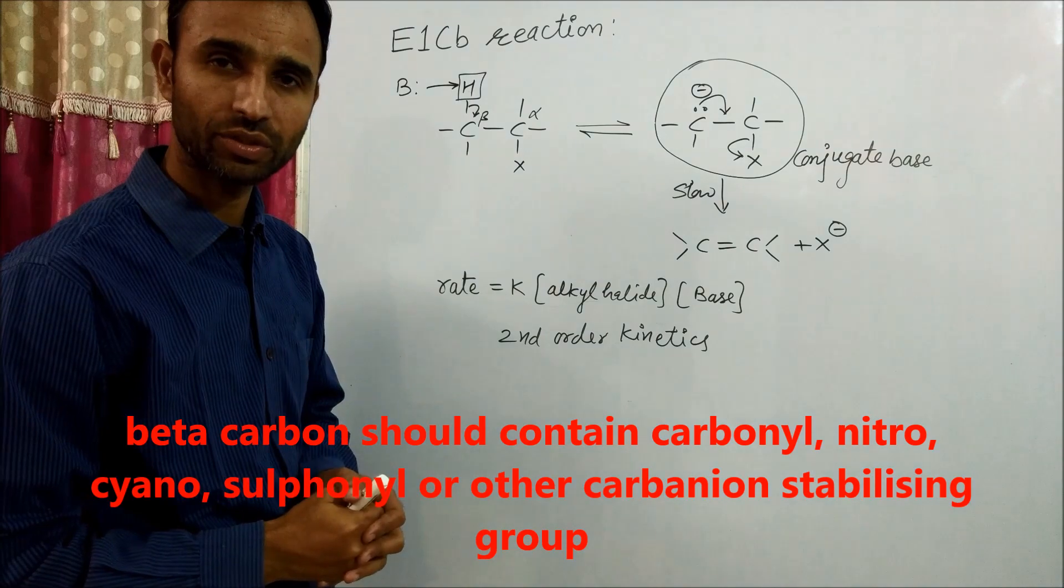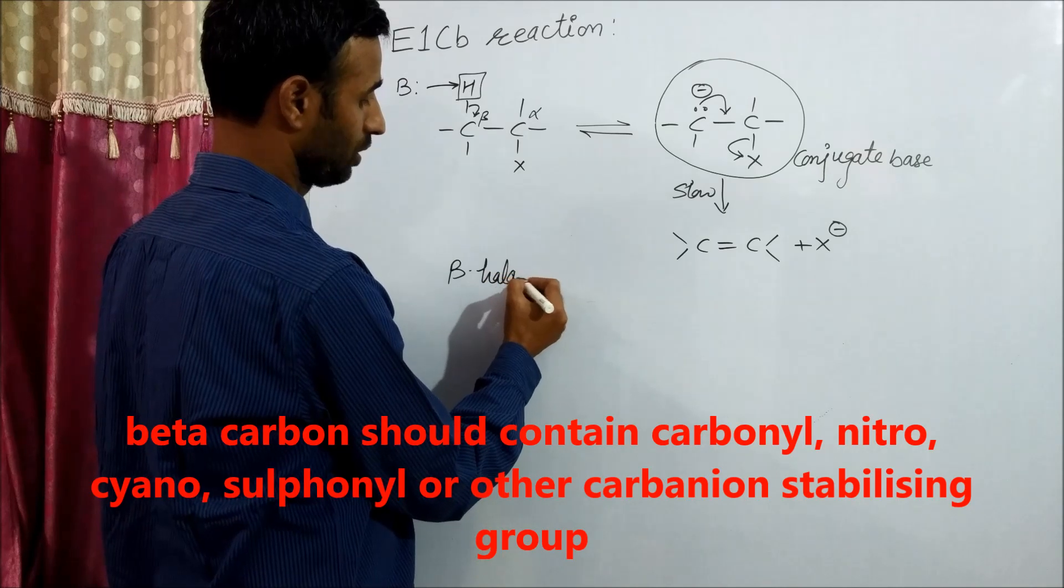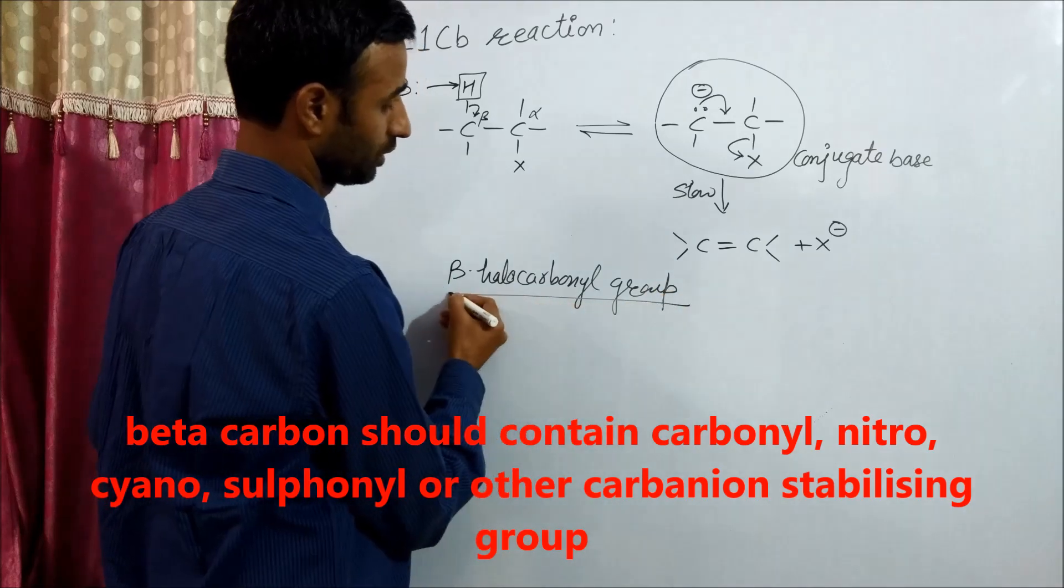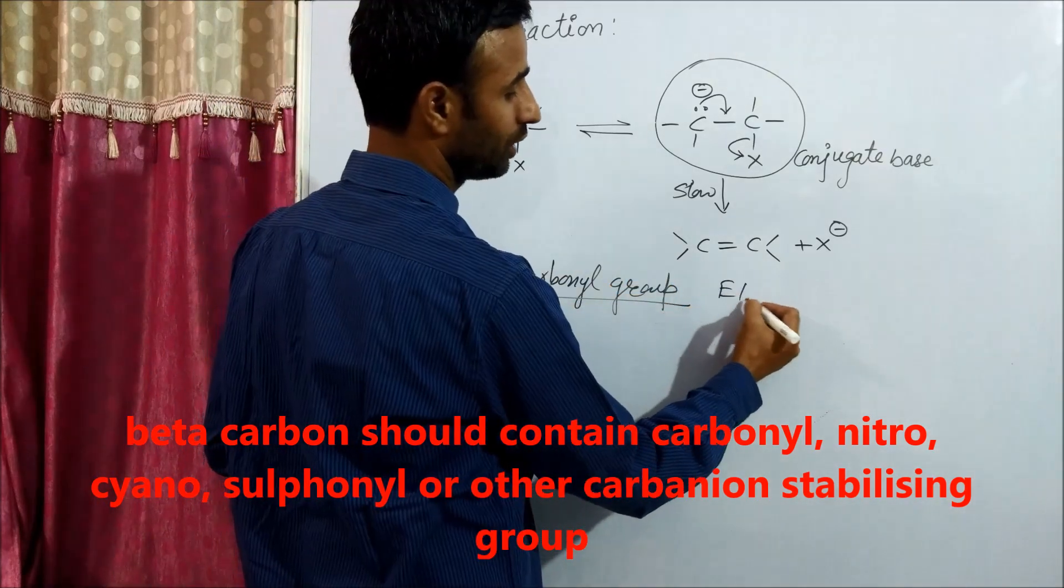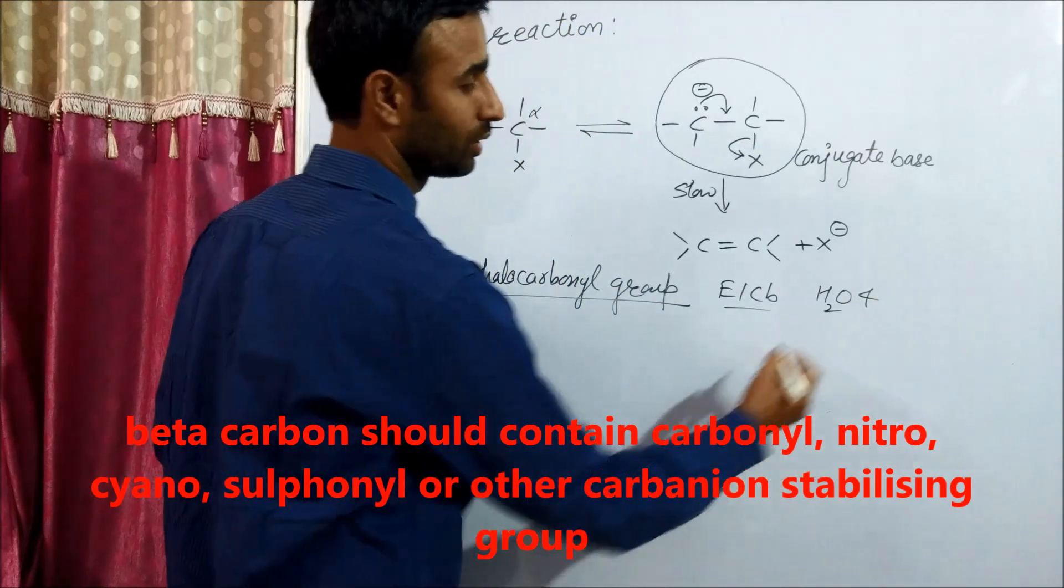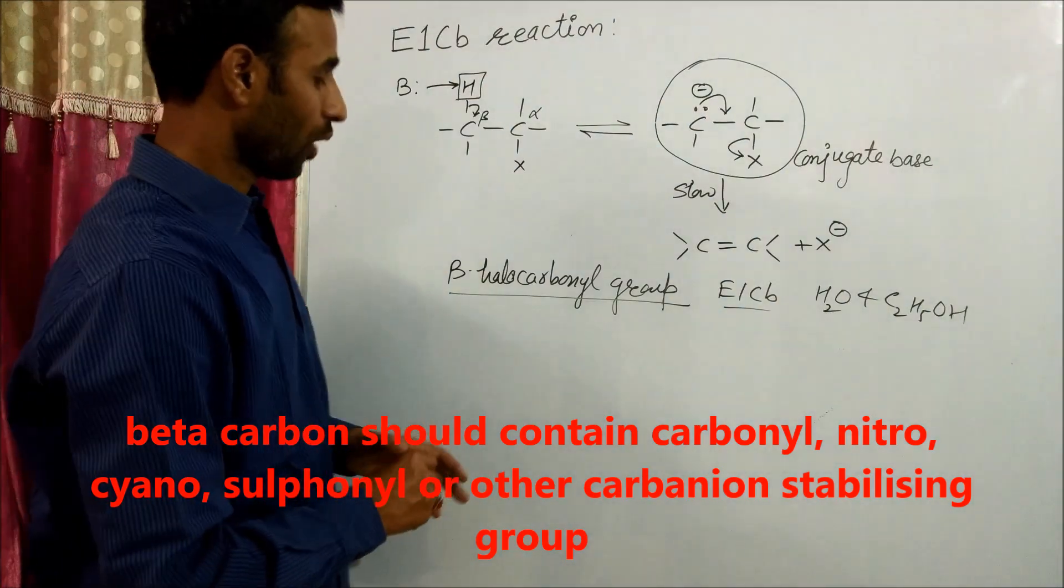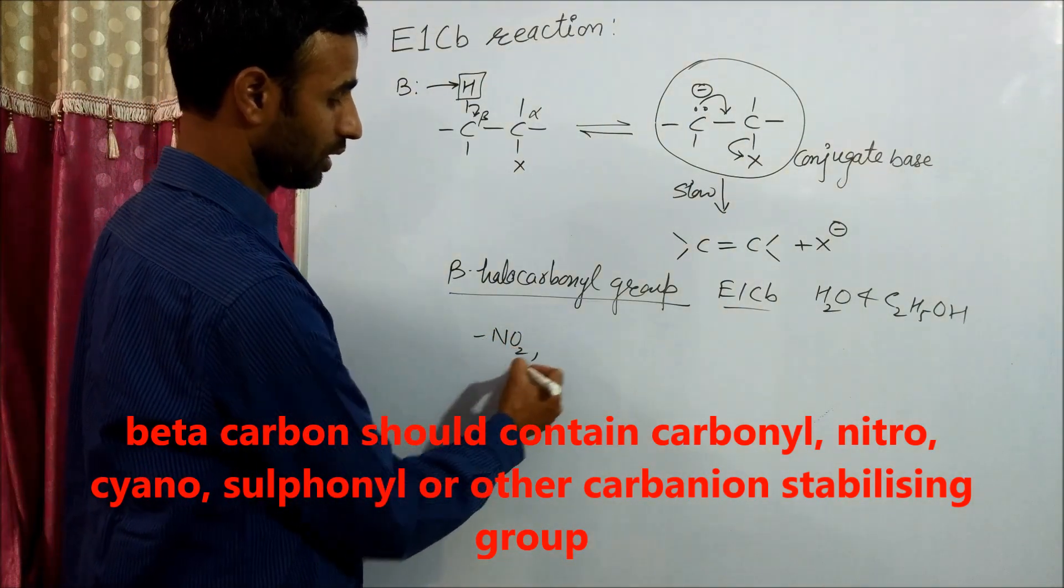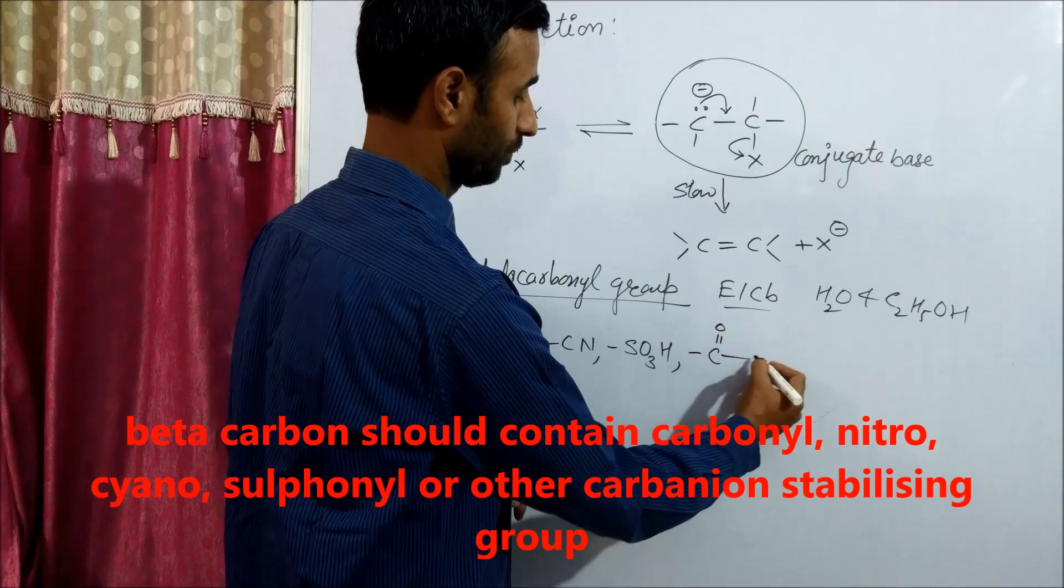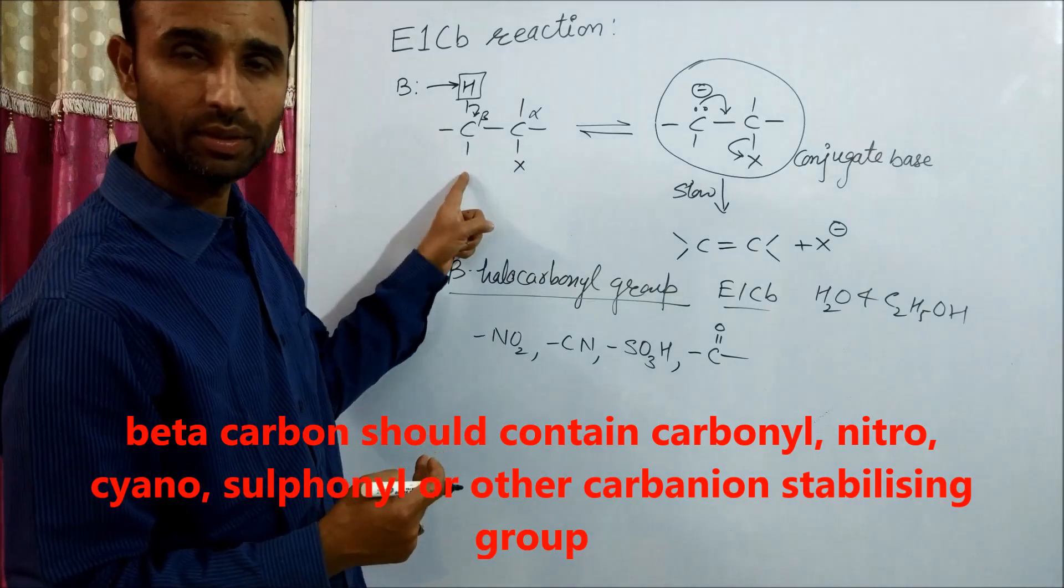The carbanion is stabilized when electron withdrawing groups are attached. Beta halo carbonyl compounds always undergo E1CB reaction even in the presence of water or ethanol as solvents. Groups like nitro, cyanide, sulfonate, or carbonyl are electron withdrawing groups that favor E1CB reaction when attached at the beta carbon.